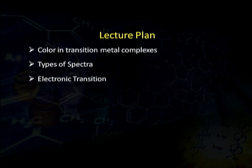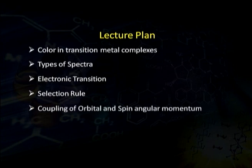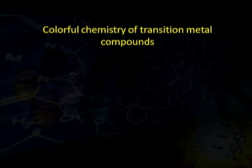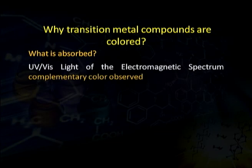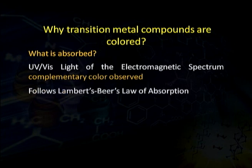Why electronic transitions are of different nature, and the selection rules followed for electronic transitions, the coupling of orbital and spin angular momentum, and the term symbols obtained after electronic transition. Chromate complexes are yellow, iron complexes are red, and copper complexes are blue in nature. The UV visible light of the electromagnetic spectrum is absorbed by transition metals, and the color observed is complementary to the absorbed light.